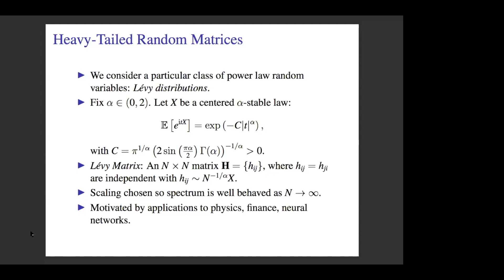We define the Levy matrix to be a symmetric matrix, and this time, instead of Gaussians, we take these Levy distributions. We scale by N to the negative 1 over alpha. The scaling is different because we have many outliers, so we need the scaling to fix the spectrum on a constant interval as N goes to infinity. These heavy-tailed models arise in physics, finance, and more recently in machine learning. They were introduced in 1993 by physicists interested in the stock market.